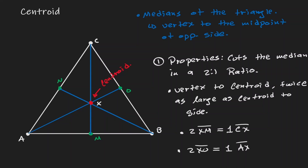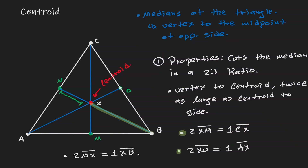If we consider the median NB and measure the distance from the vertex to the centroid, that distance is going to be twice as large as the distance from N to X. So two times NX is equivalent to one XB. The distance from the vertex to the centroid is always twice as big as the distance from the centroid to the side of the triangle.